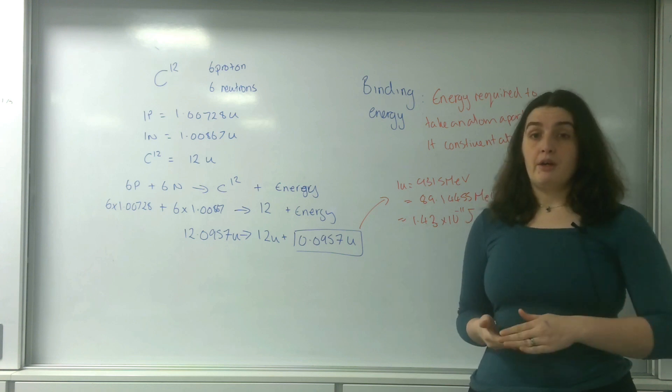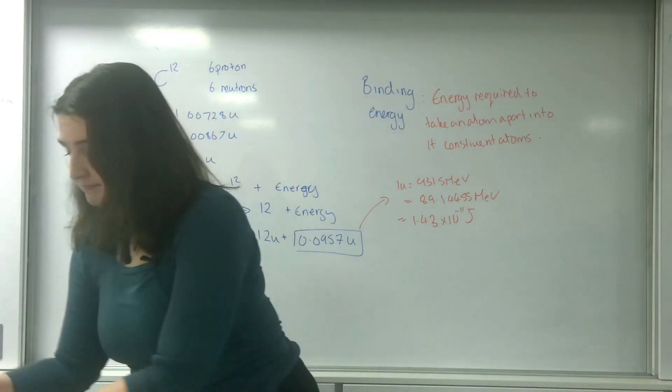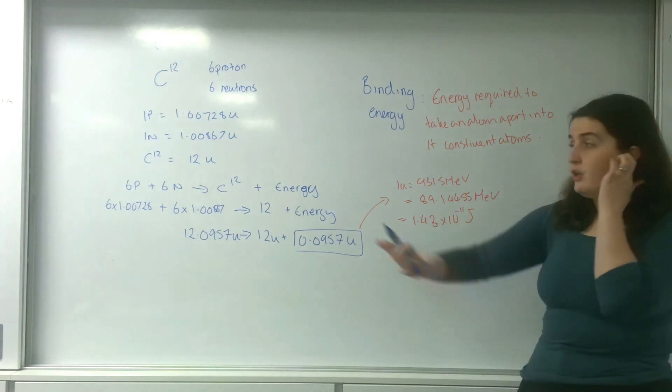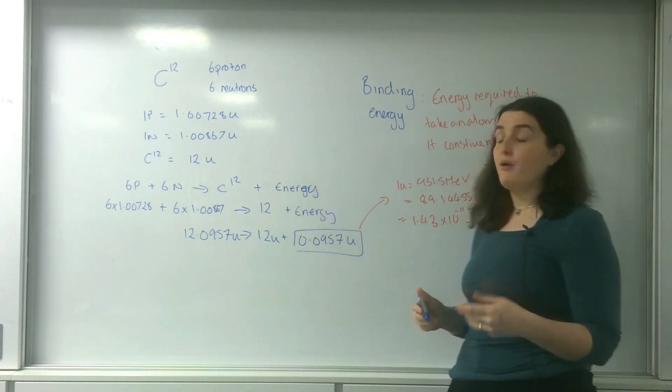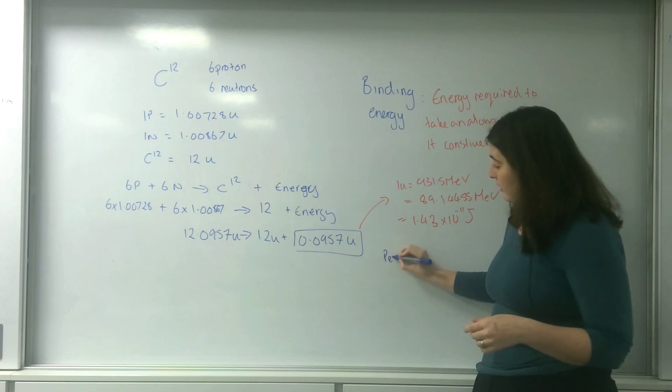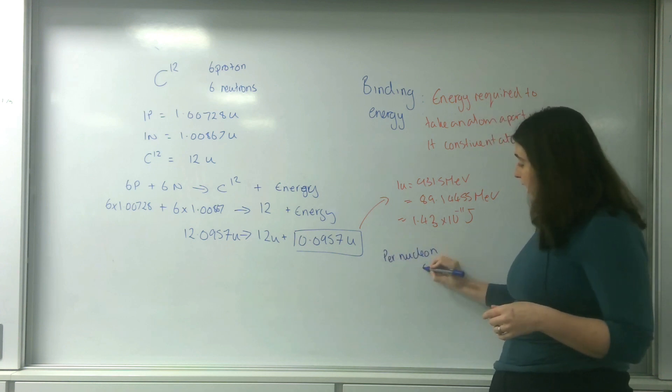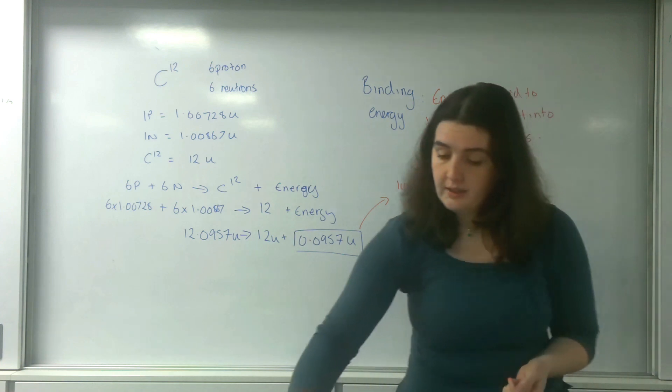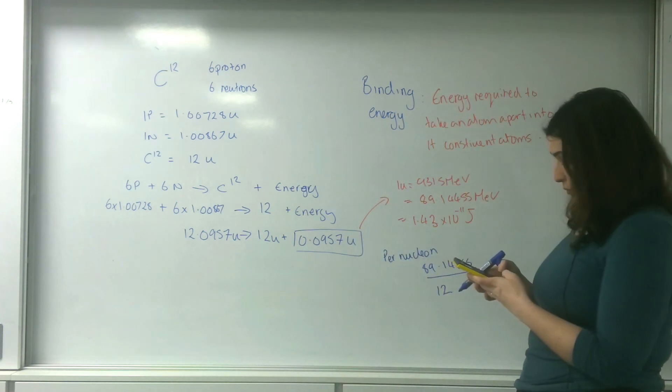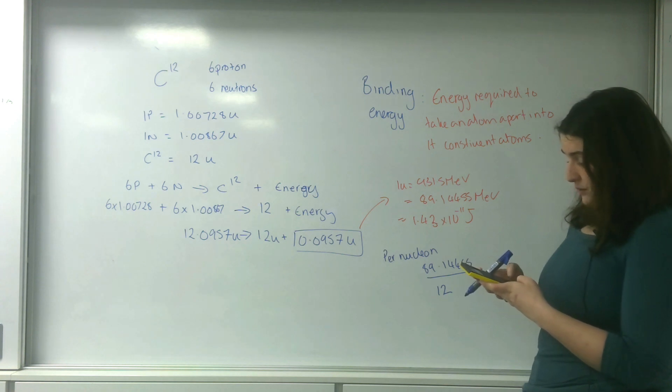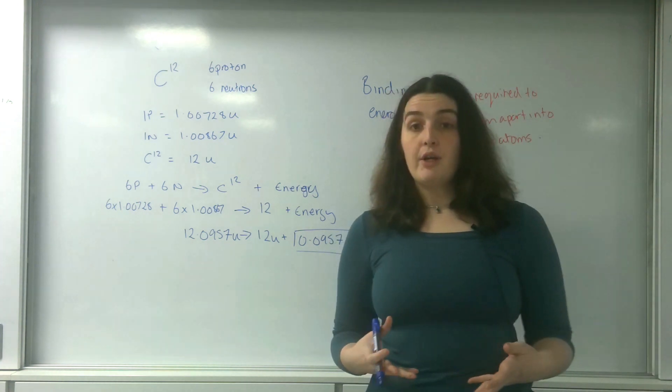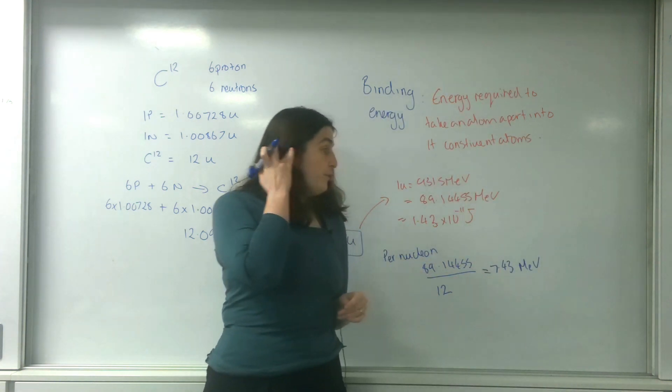Binding energy per nucleon is basically taking that value there and dividing it by how many protons and neutrons I have. In total I've got six protons and six neutrons, so my nuclear number is 12. For per nucleon I'm going to take 89.14455 divided by 12 and I get an answer of 7.43 MeV. So binding energy per nucleon for carbon-12 is 7.43 MeV.